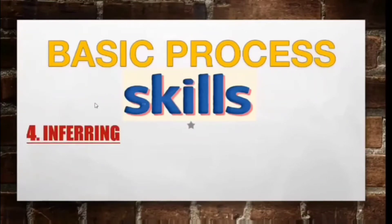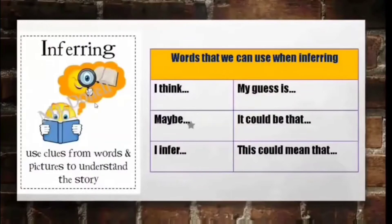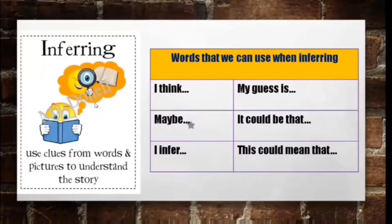Skill number four: inferring. Inferring is the skill of using what you have observed to explain what has happened. It uses clues from words and pictures to understand a story or situation. Words we can use when inferring are: I think, maybe, I infer, my guess is, it could be that, this could mean that.